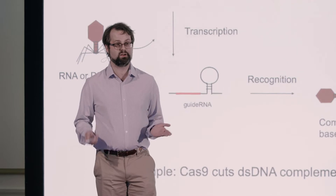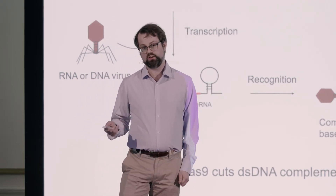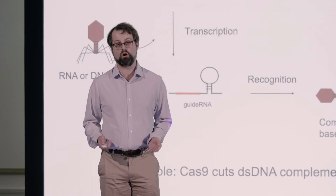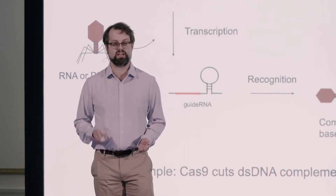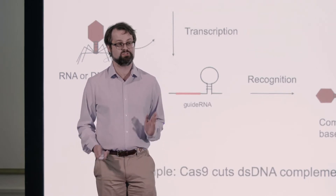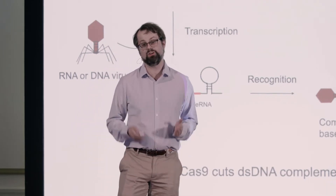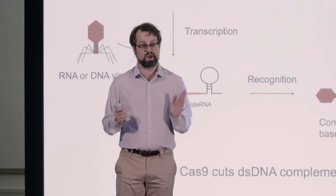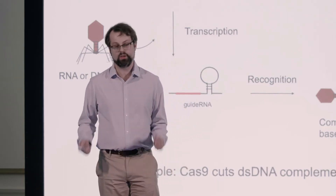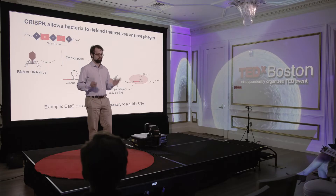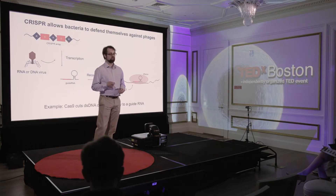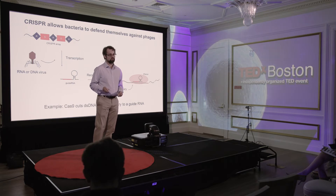One very famous effector protein is Cas9. For those of you who aren't familiar with Cas9, I'd suggest you pause this video and look it up, because it's really quite incredible. Cas9 is able to cut double-stranded DNA that's complementary to a guide RNA.